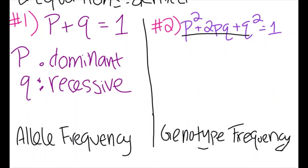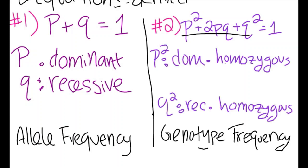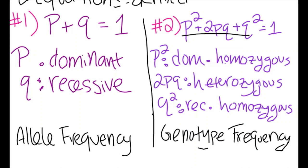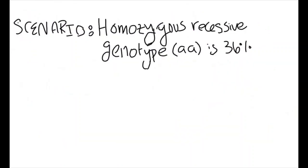Now that we're talking about genotype frequency, these variables represent different things. P squared now becomes the homozygous dominant genotype, and Q squared now becomes the homozygous recessive genotype. 2PQ, for the combination of both our recessive and dominant alleles, represents our heterozygous genotype. Now, with both of our equations, we can answer some practice problems.